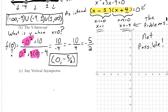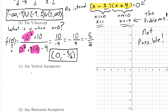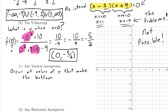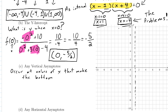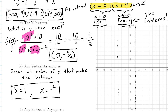The next part asks for vertical asymptotes. These only happen with rational functions and occur where the bottom is zero — at the problem values. The vertical asymptotes are these invisible vertical lines that the function is split by; it never crosses them. So the vertical asymptotes are at X = 1 and X = −4. The equations of vertical lines look like X equals some number, so we have two vertical asymptotes for this rational function.